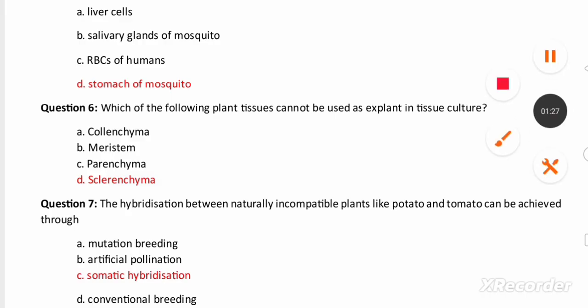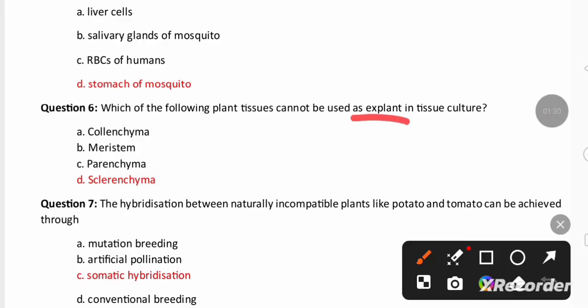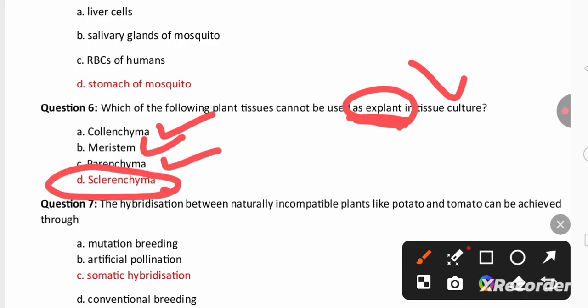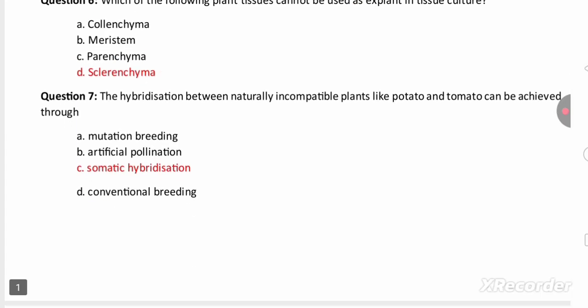Next question is which of the following tissue cannot be used as explant in tissue culture? Explant is a part of the plant which is used in tissue culture, in micropropagation. So explant can be taken from collenchyma, meristem and parenchyma but it cannot be taken from sclerenchyma because sclerenchyma is a dead tissue.